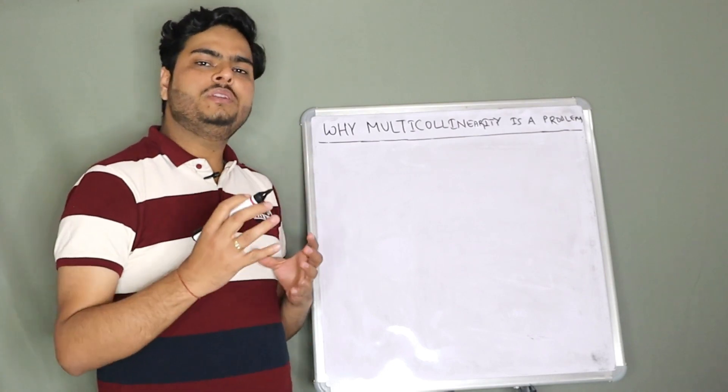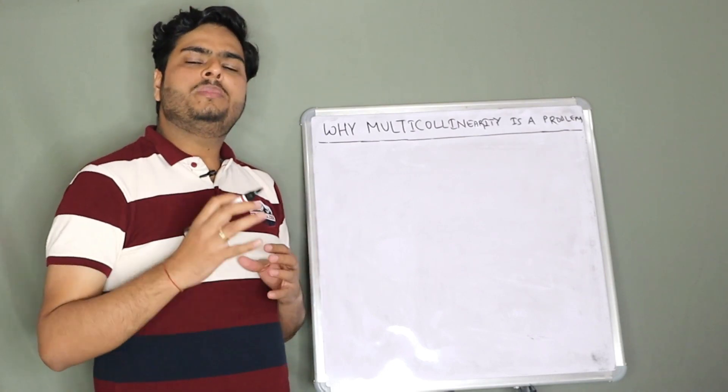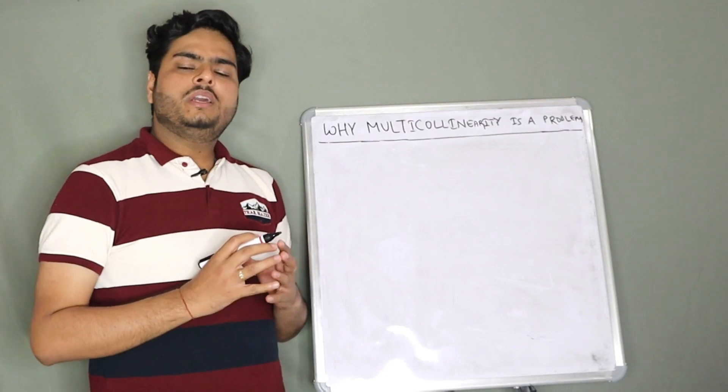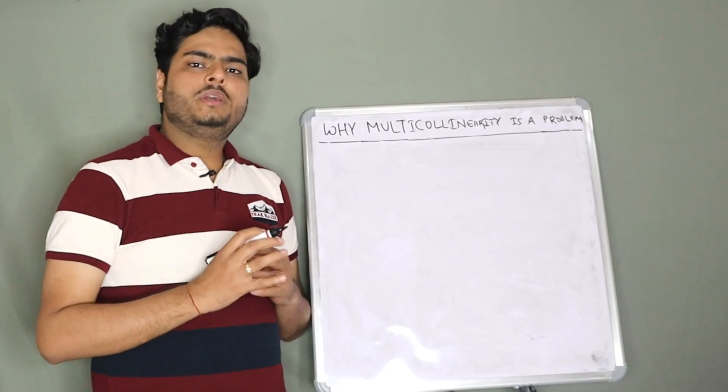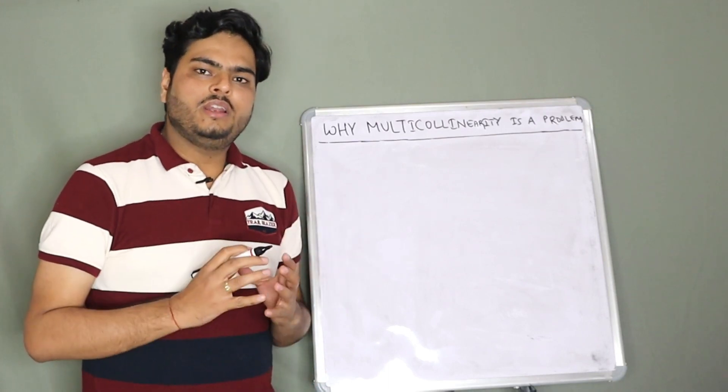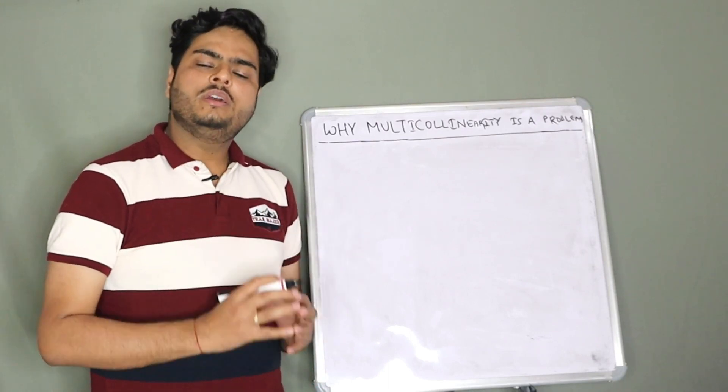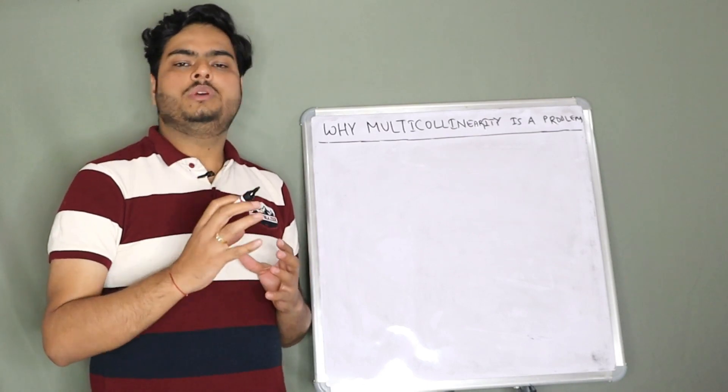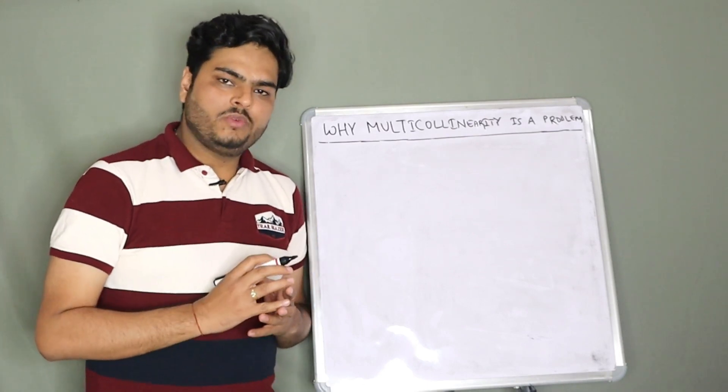We removed some correlated features, and that is where the interviewer might stop you and say, can you tell me why multicollinearity is a problem? We will understand in detail what is multicollinearity, why that is a problem, and what are the ways to remove it. Let us start one by one.